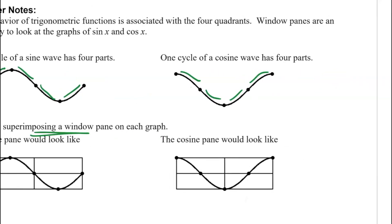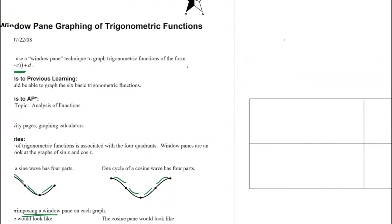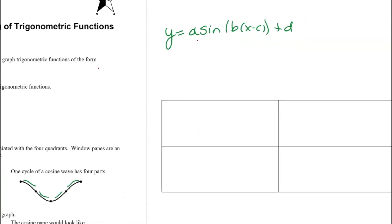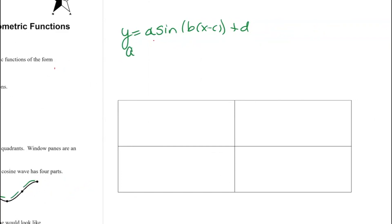Thinking about that generic form, y equals a*sin(b(x - c)) + d. When we have a curve that is in that form, we know that this a that's sitting out front is going to be our amplitude. That means that the graph of sine from this middle section is going to be up a or down a. That's going to be its highest and lowest points.